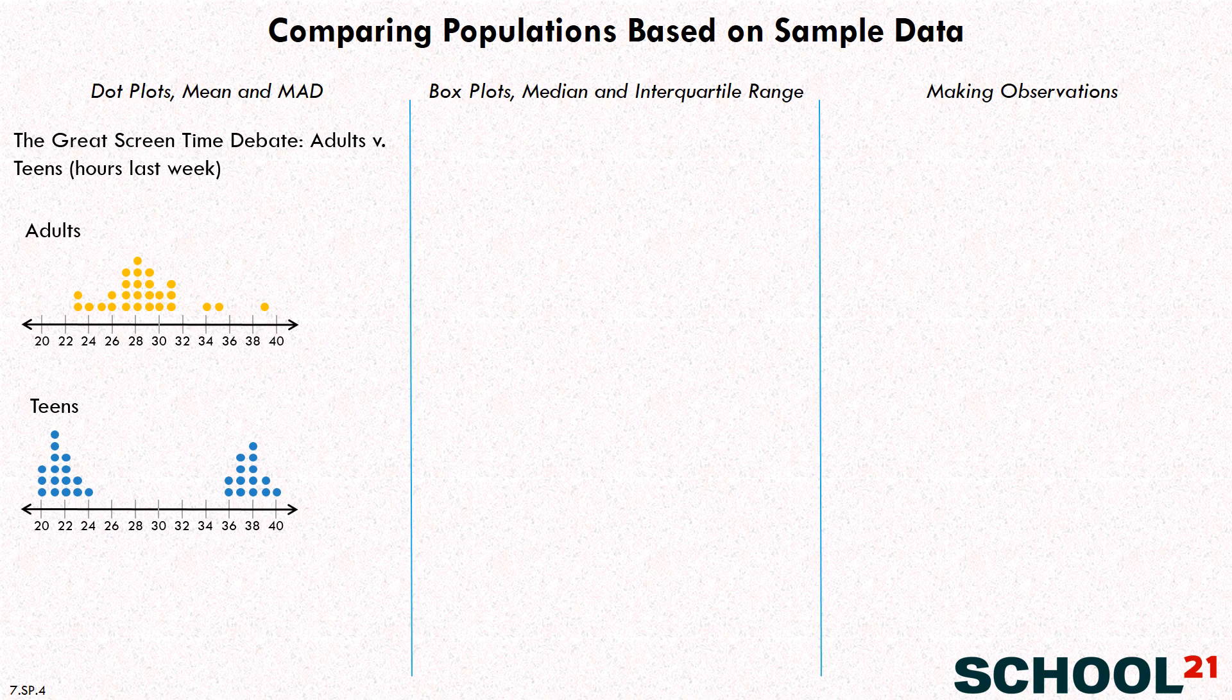So here are the graphs for the adults and the teens. You can see there's 30 data points for each one, ranging from 20 hours in the last week up to 40 hours. So let's go over to the right and ask our first question. What do you notice immediately from the dot plots? Because obviously they're very different. What do you think about how the adults' data seems to be laid out and how the teens?